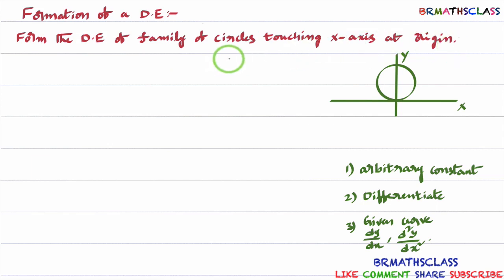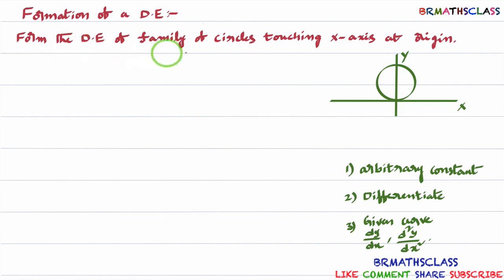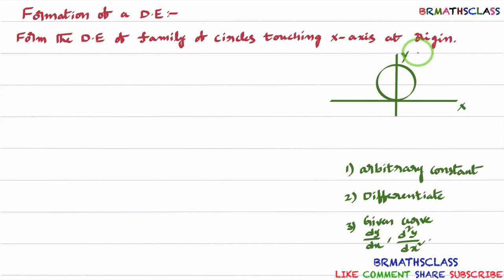What is the difference between this problem and previous problems? In previous problems, they gave the equation directly and asked to form a differential equation. But here the equation is not given directly — we need to find that equation first. We need to write the equation of the family of circles touching x-axis at the origin, and then form the differential equation.